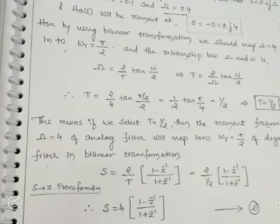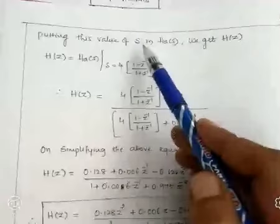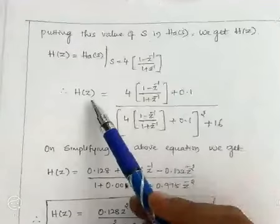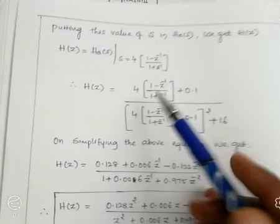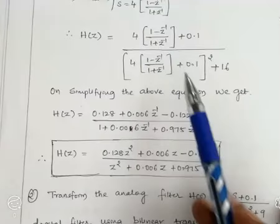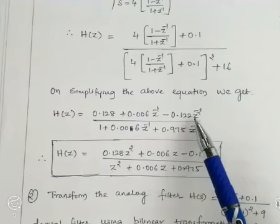Substituting s = 4(1 − z⁻¹)/(1 + z⁻¹) wherever s appears in H(s) = (s + 0.1)/[(s + 0.1)² + 16], and simplifying the numerator and denominator, we obtain: H(z) = (0.128 + 0.006z⁻¹ − 0.122z⁻²) / (1 + 0.006z⁻¹ + 0.975z⁻²). This is expressed in terms of negative powers of z.